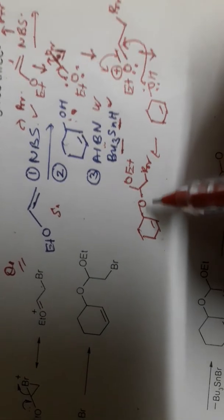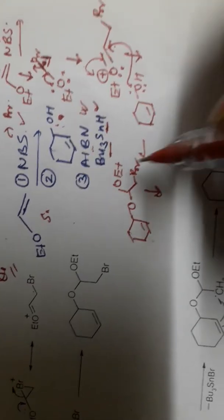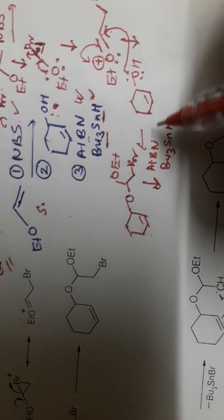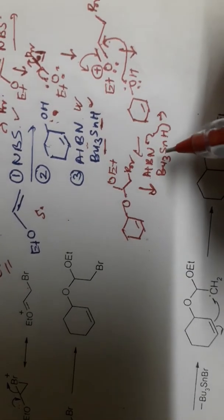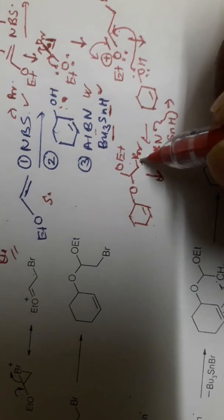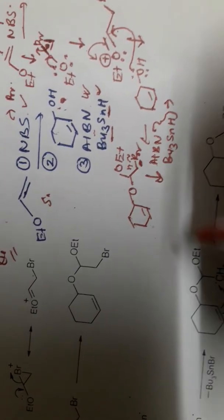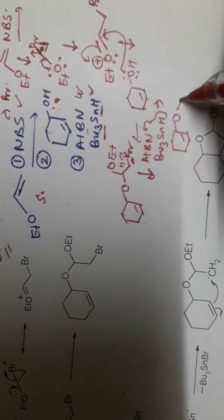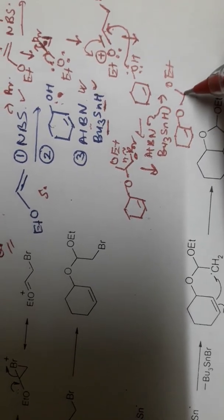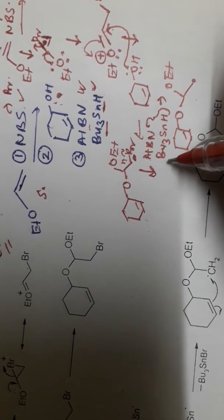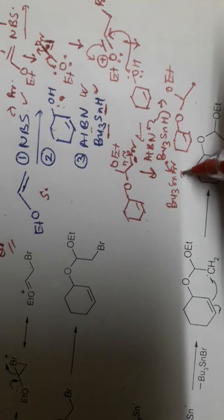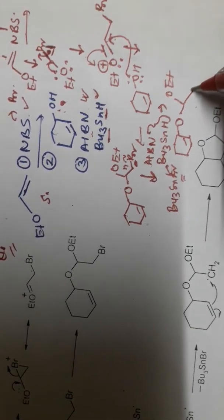The new intermediate is now in the reaction medium, and AIBN along with tertiary butyl tin hydride is added. This agent initiates the free radical reaction and acts on the carbon–bromine bond, generating a carbon-centered free radical.